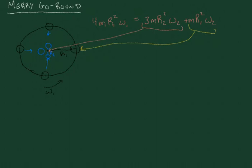And so now we can find out what the angular momentum is after the three children have moved in. So we see that Omega-2 times 3M R2 squared plus M R1 squared is equal to 4M R1 squared Omega-1.